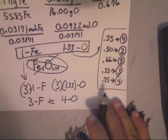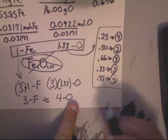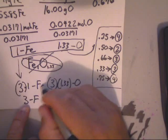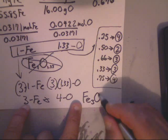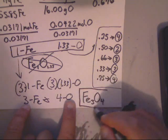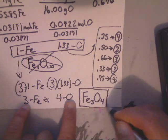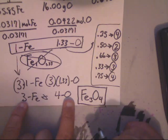So finally, my final answer would be Fe3O4. And that is the empirical formula of magnetite.